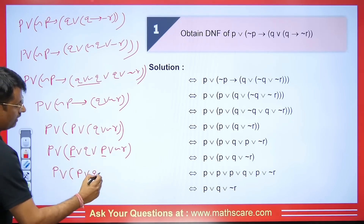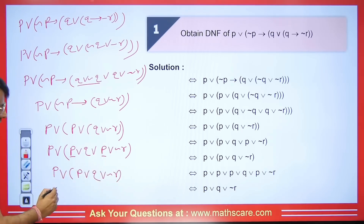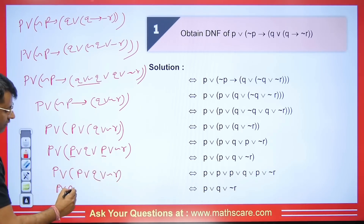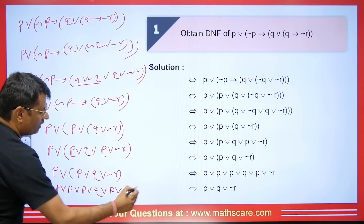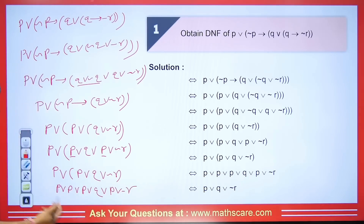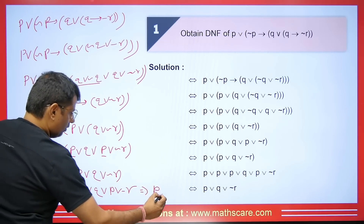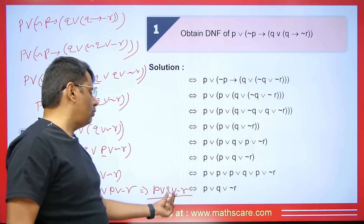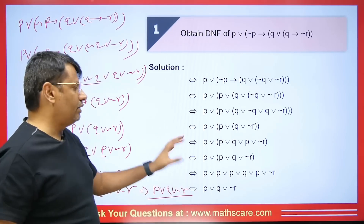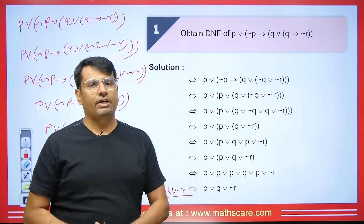So this will be P AND Q and here this will be P AND negation of R. By idempotent law, PPP also equals P. So its value will be P AND (Q OR negation of R). Disjunction is between PQ and negation R — this will be its DNF form, the disjunction normal form.